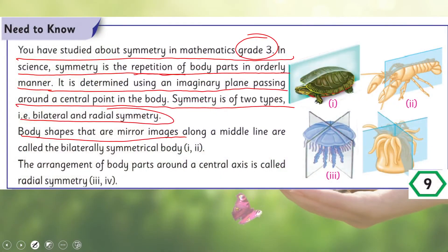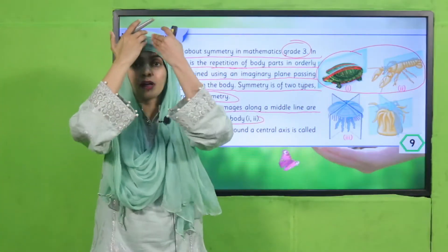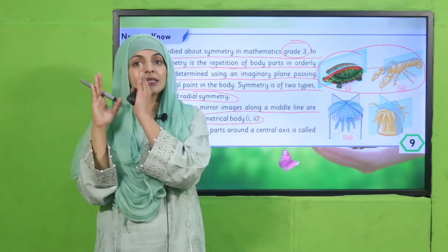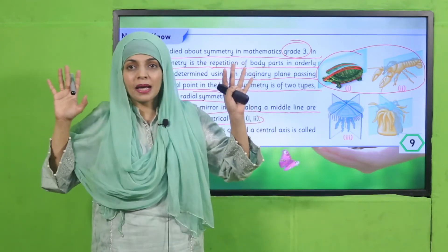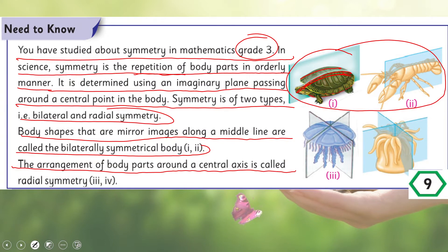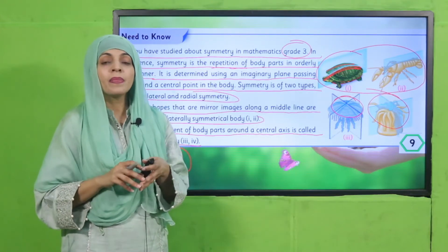Bilateral symmetry means the two sides are mirror images of each other. If you draw an imaginary line dividing the body in half, both sides look the same. Radial symmetry is the arrangement of body parts around a central axis, like a circular pattern. Both vertebrates and invertebrates mostly have bilateral symmetry, but some invertebrates also have radial symmetry.